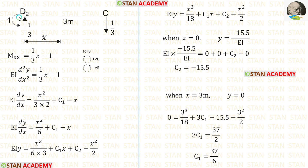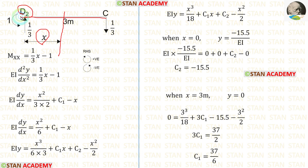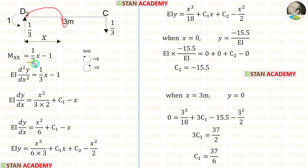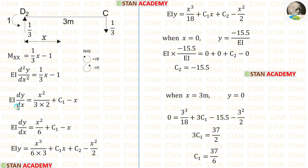Now let us take D2C and find Ydx. In D2C, there is only one portion, so we make only one section at distance x from point D2. Let us make Mxx. The vertical reaction is acting towards the section in the clockwise direction, so it is positive with distance x. Then there is a moment acting in the anticlockwise direction, giving minus 1. Let us equate Mxx with EI·d²y/dx², then integrate twice to get the equations.